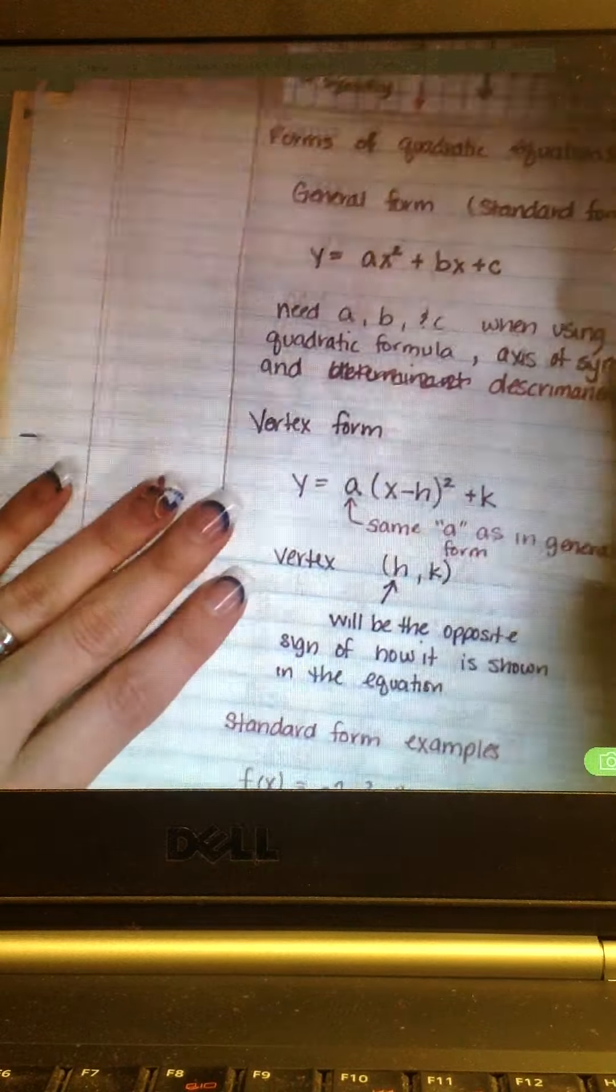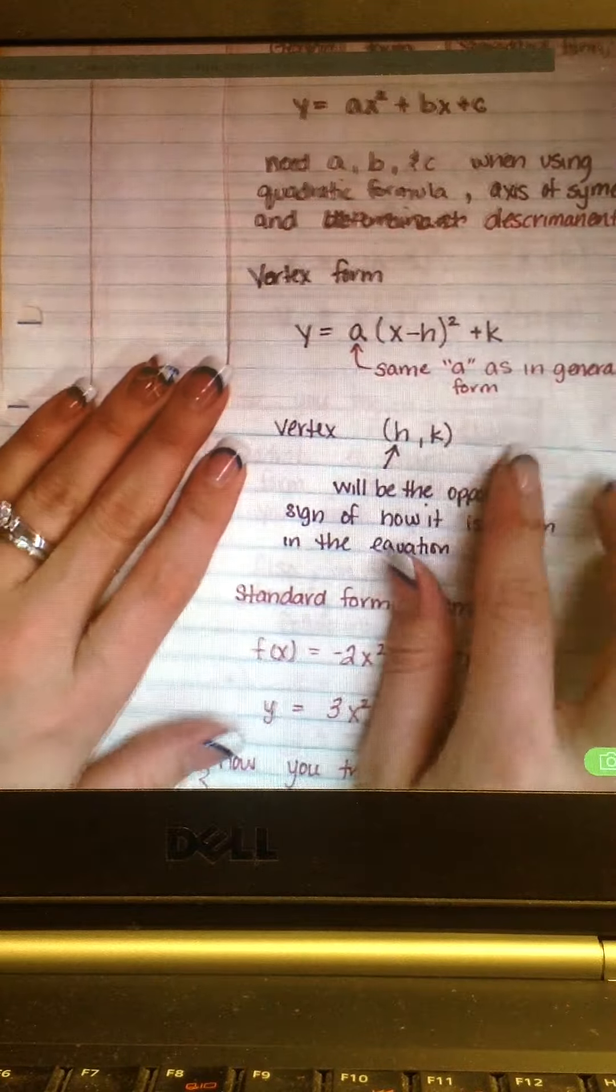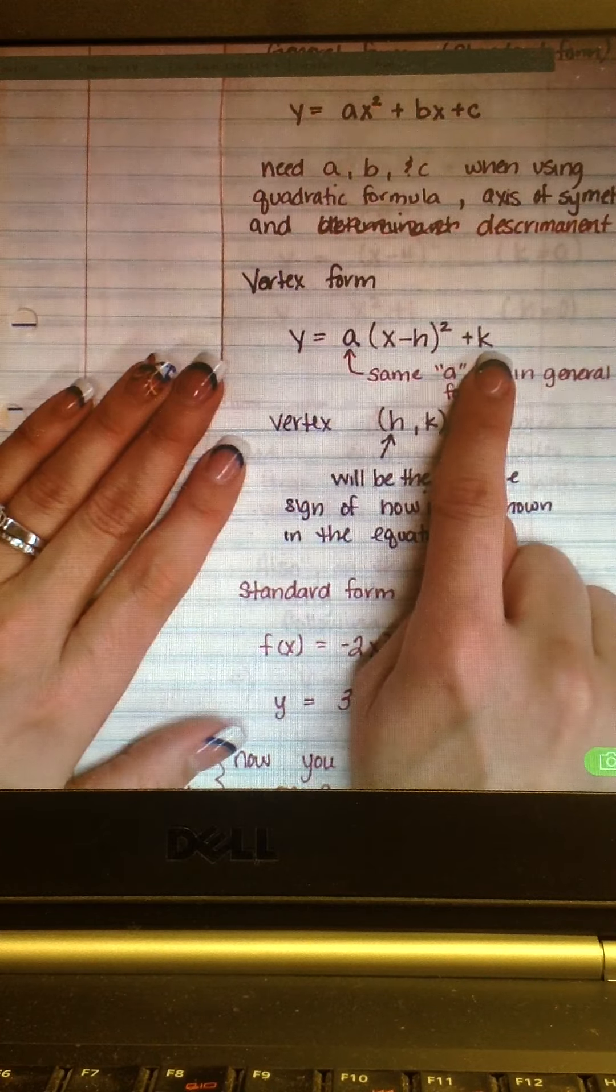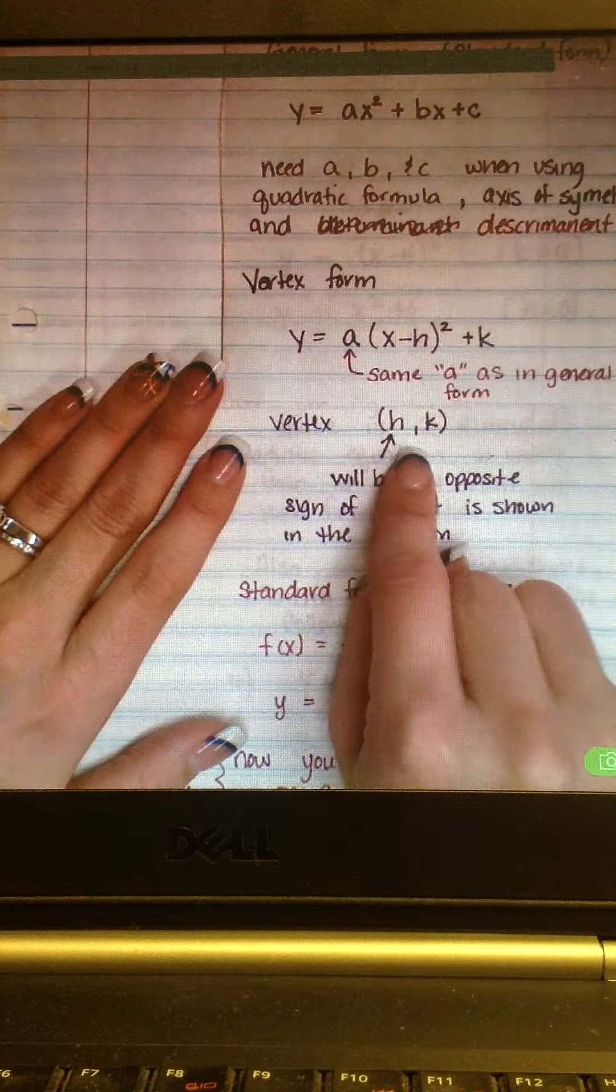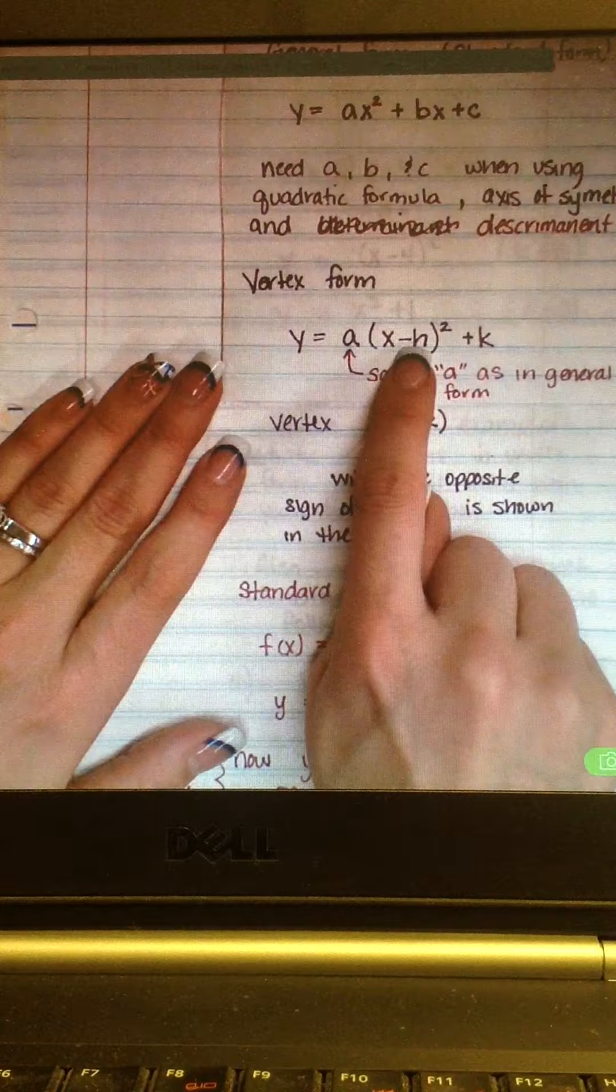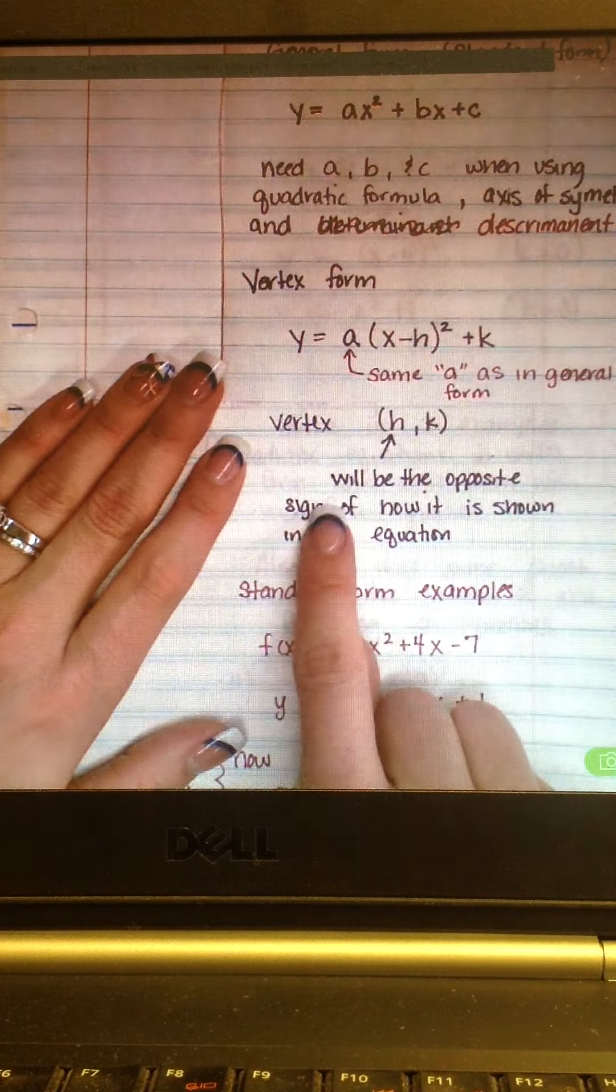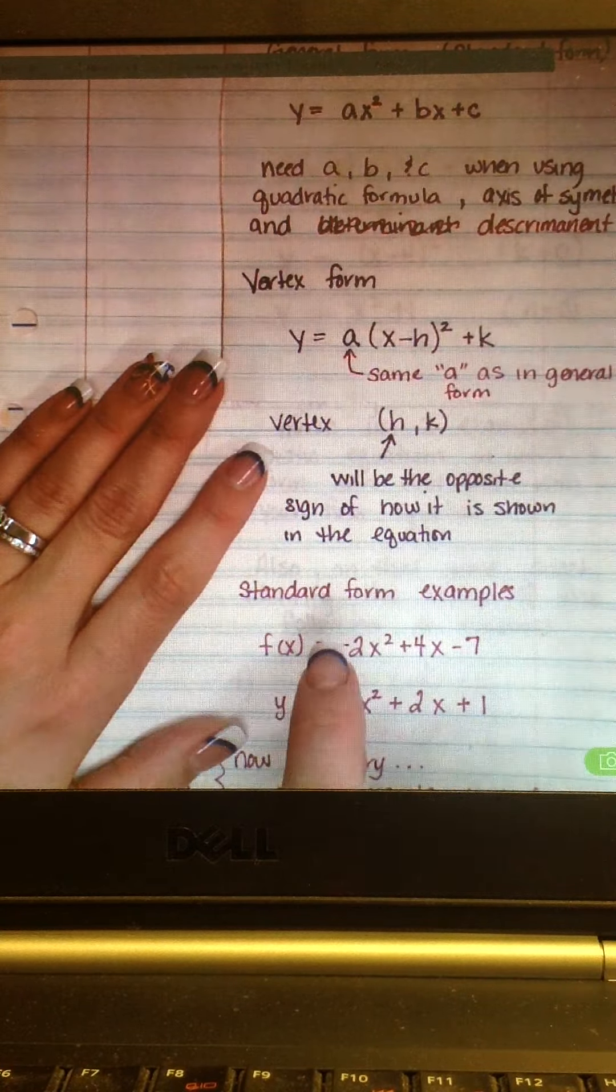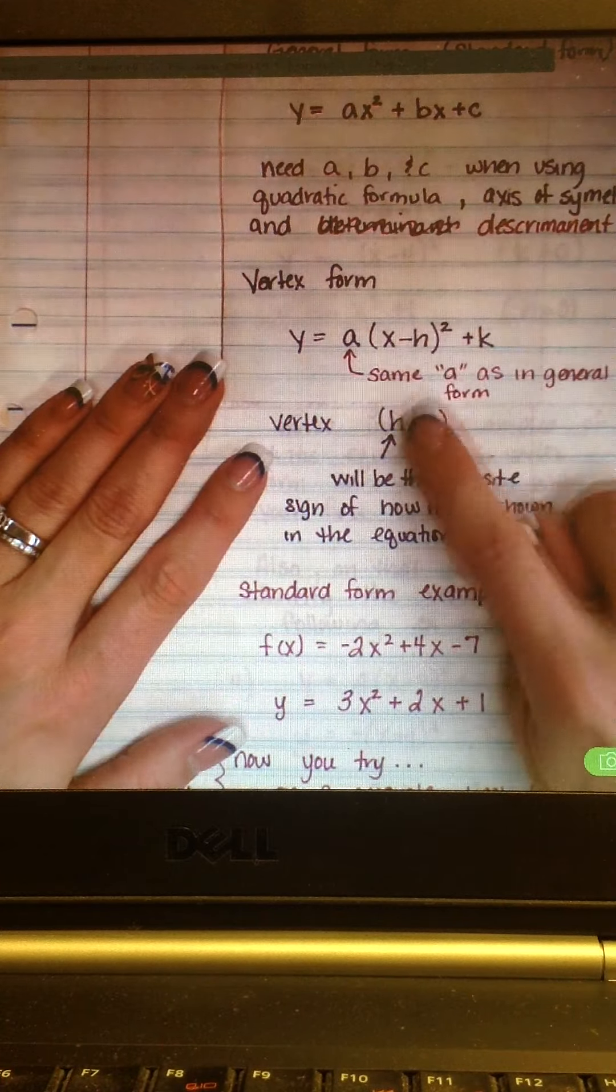The vertex form is called the vertex form because you can see the vertex right in the middle of the equation. So, the H becomes the X value of your vertex and the K becomes the Y value of your vertex. If you'll notice, this says X minus H and this just says H. What that means for you is that the H will be the opposite sign of how it's shown in the equation. So, if it's negative here, it becomes positive. If it's positive here, it becomes negative.